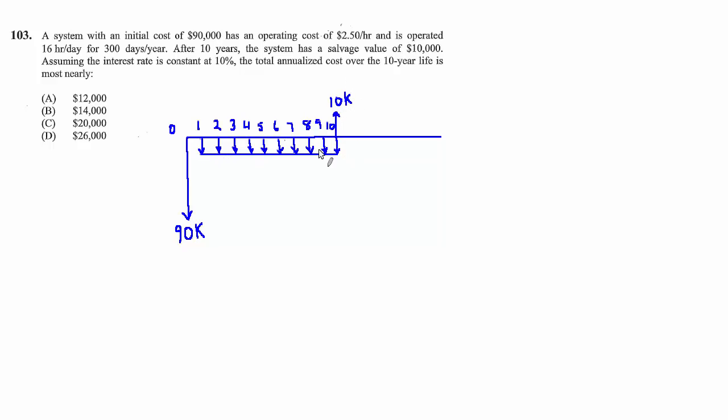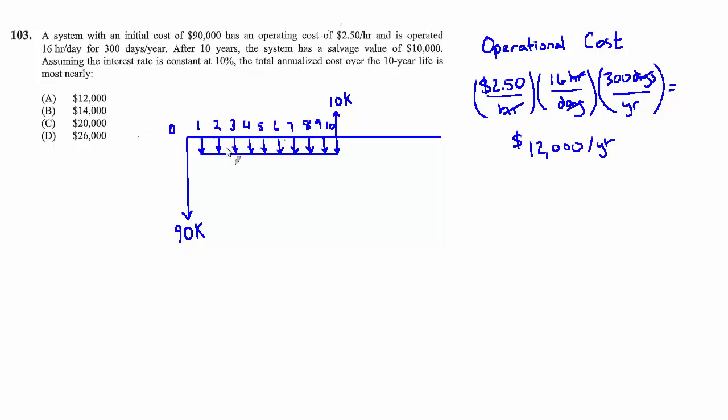Now let's work out in years 1 through 10 what that annual operating cost is. They're assuming that it's $2.50 an hour, 16 hours a day, 300 days a year, and apparently that's not changing over time. So, $2.50 an hour times 16 hours a day times 300 days a year should give us dollars per year, and that works out to $12,000. So each one of these 10 annual cash flows is $12,000.